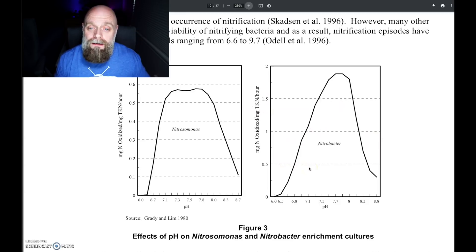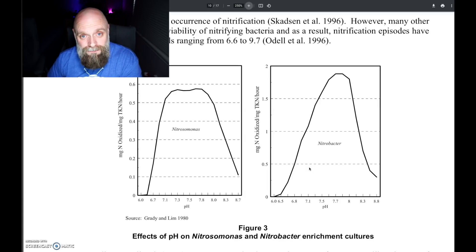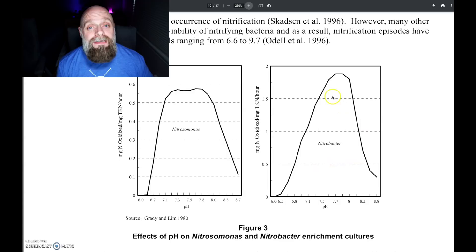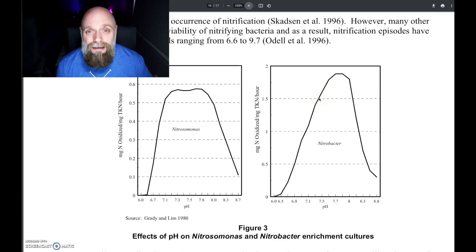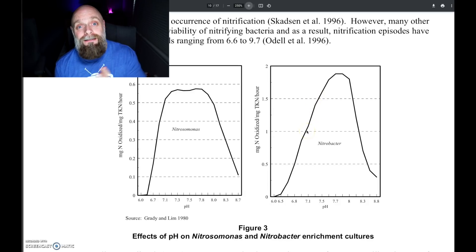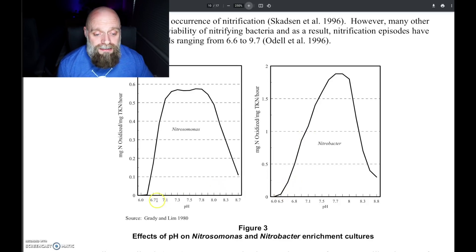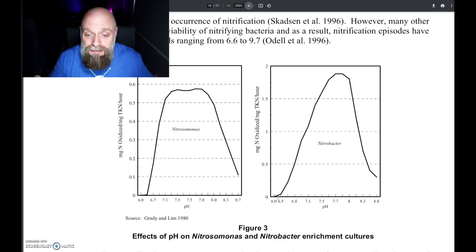Over on the right-hand side we see Nitrobacter — the microbe responsible for the second half of the nitrification process, going from nitrite to nitrate. There are lots of different types of Nitrobacter species. The optimal pH range for Nitrobacter is even more narrow: it does a pretty good job from right around a pH of 8.2 down to maybe a pH of 7.2 or 7.3. But then it experiences a rapid drop-off in the ability to convert nitrite to nitrate as the pH goes down. In both cases, once we get down to around a pH of 6.5 or so, the ability for these particular species of microbes to do nitrification goes to almost zero.